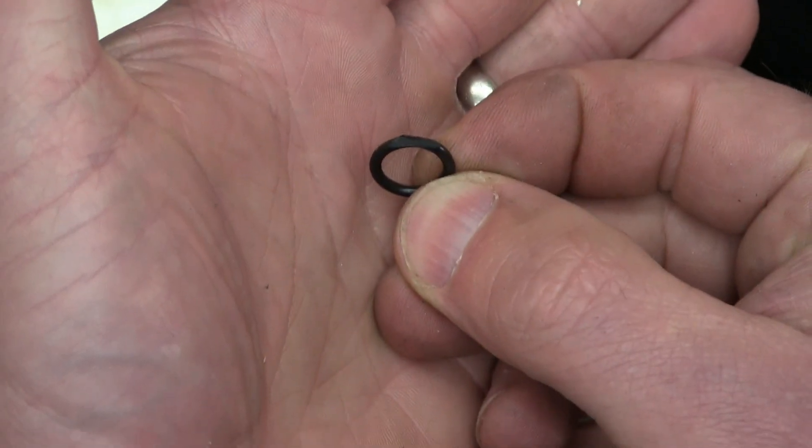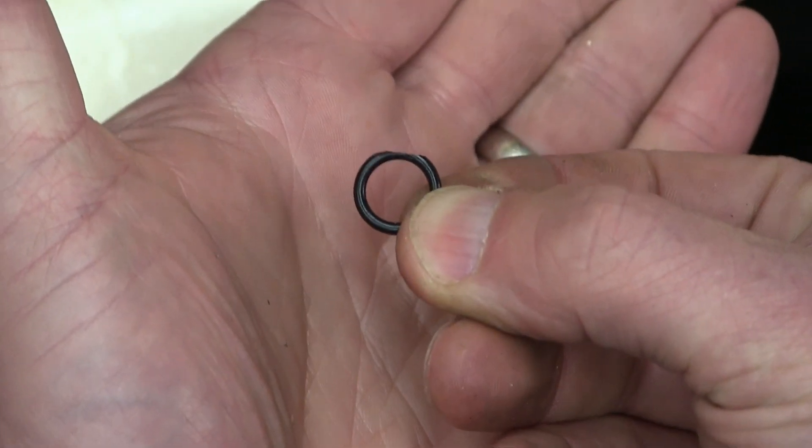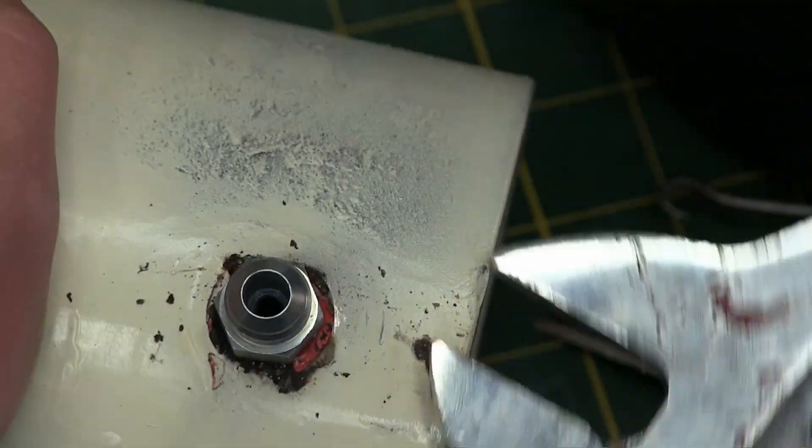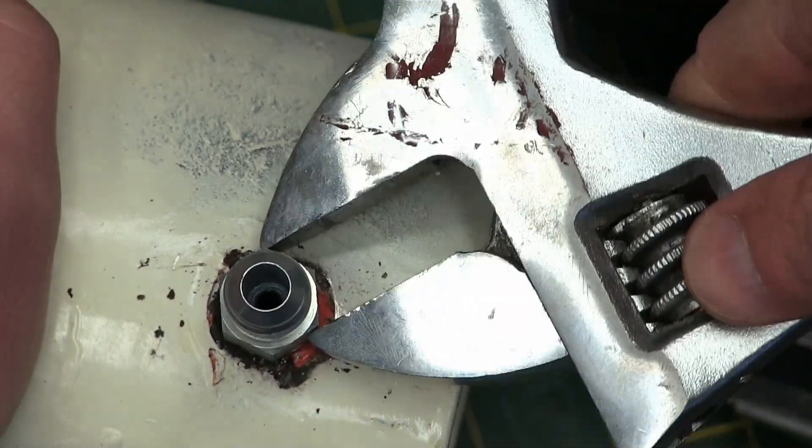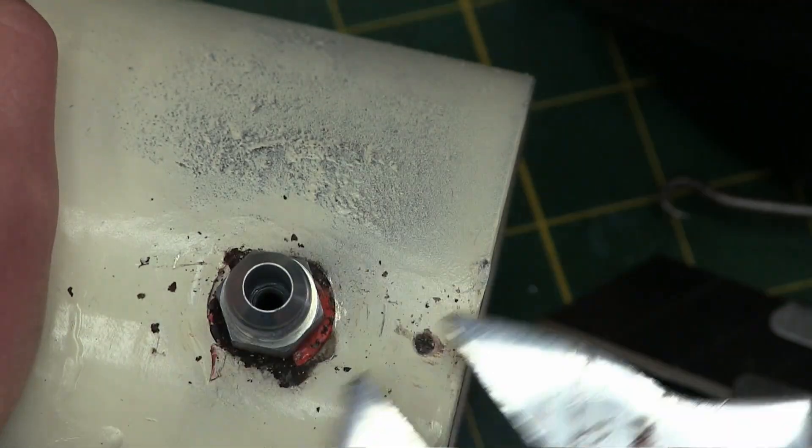I think we can all agree. The old gray mare, she ain't what she used to be. Now what for authenticity, we're gonna use the old Saskatchewan socket set. These things are great because you always know it's at the proper torque on account of it being rounded right over.